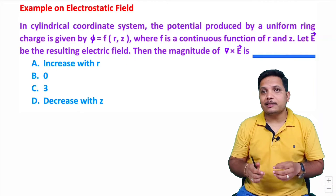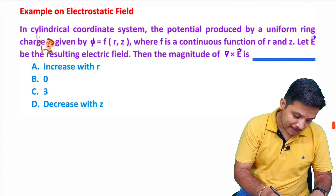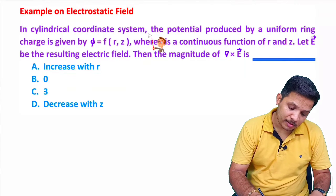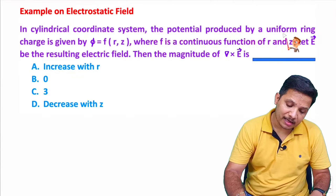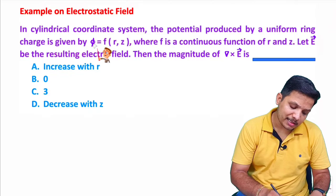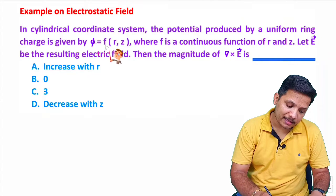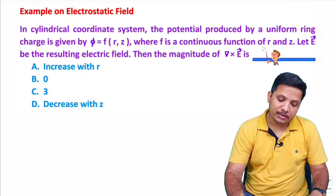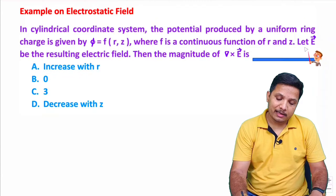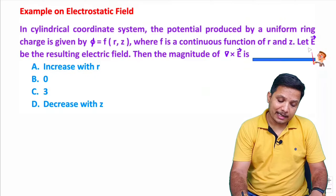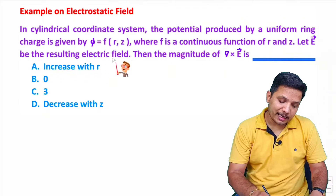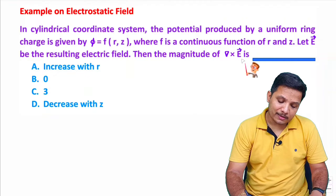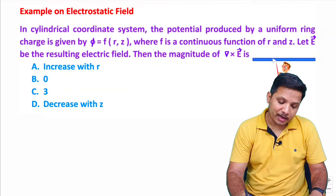Let us see the question first. In cylindrical coordinate system, the potential produced by a uniform ring charge is given by phi equals f of r and z, where f is a continuous function of r and z. Let E be the resulting electric field. Then the magnitude of del cross E — that is, the curl of the electric field — is how much?